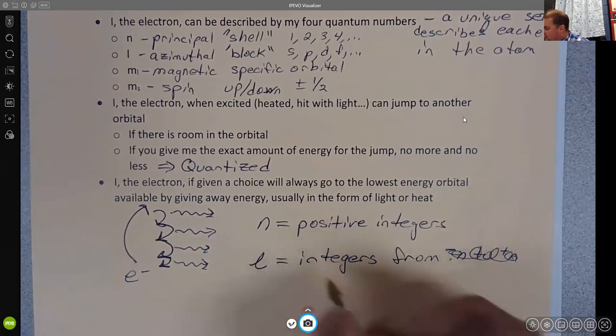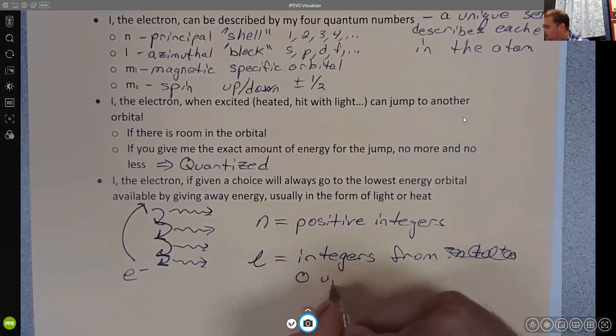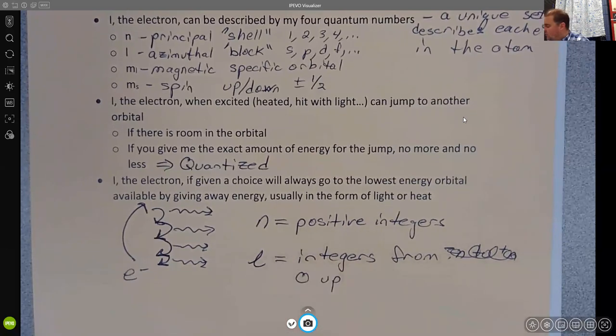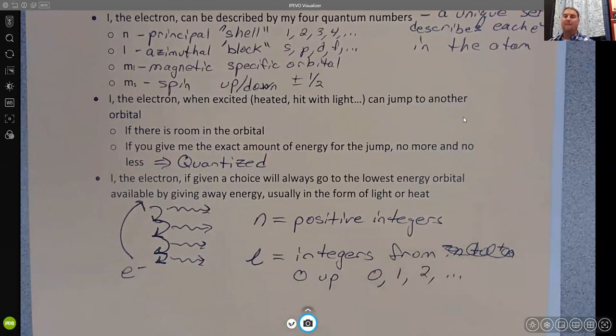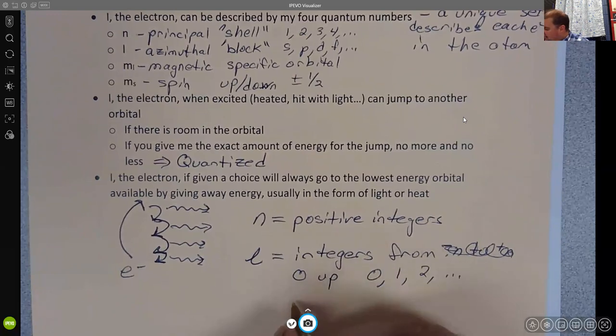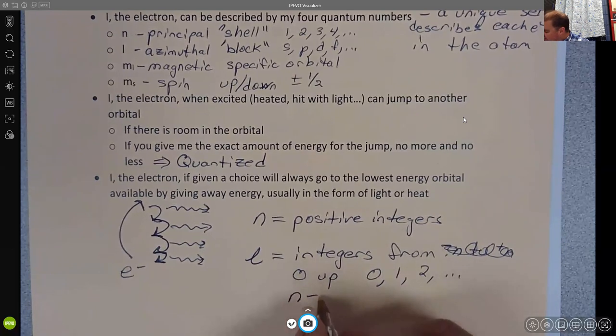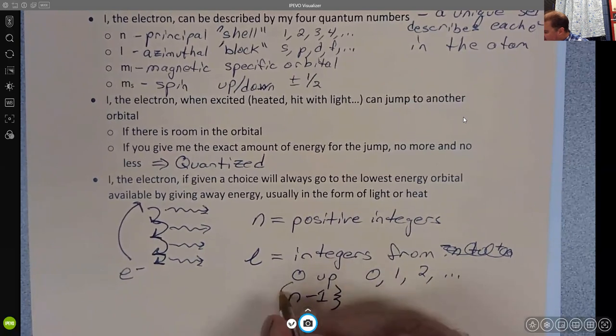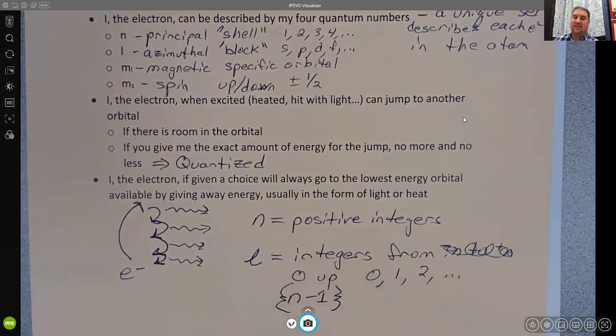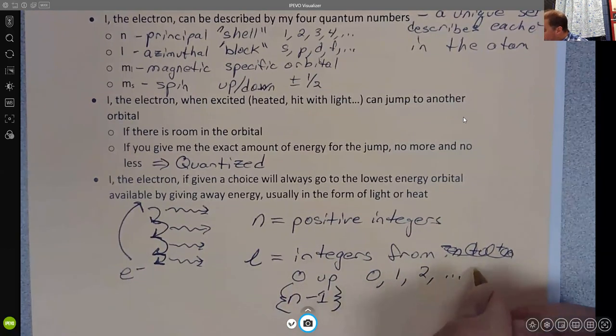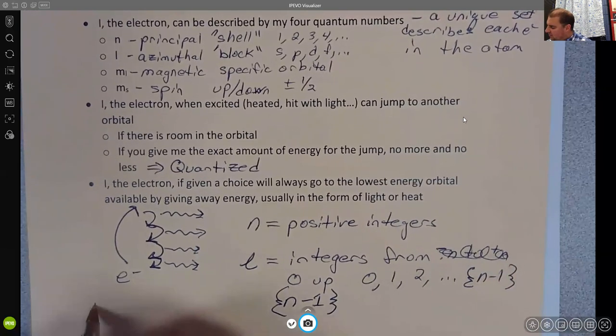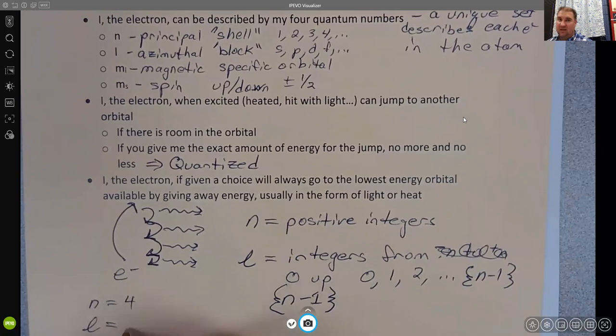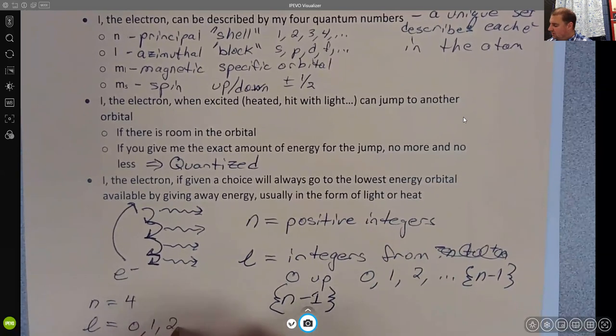Integers from zero up. So we are allowed to have zero, one, two, etc. But the limitation here is that l has to be equal to n minus one. That's the highest it can be is what I should really say. So zero, one, two, all the way up to n minus one. So if n is four, then l is allowed to be zero, one, two, or three.